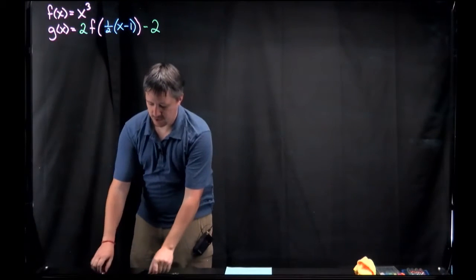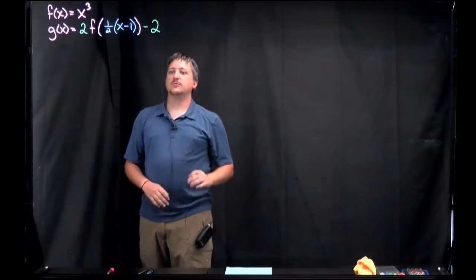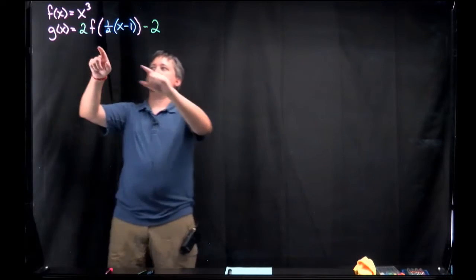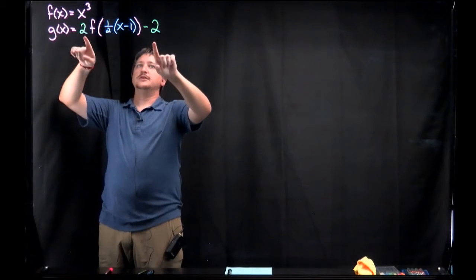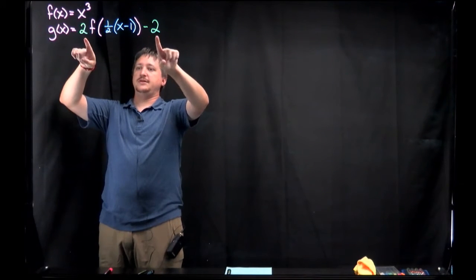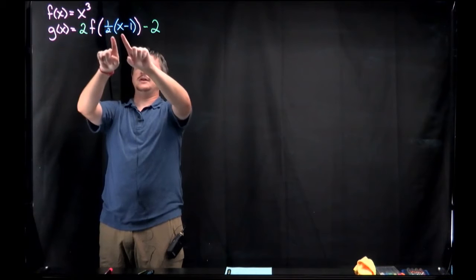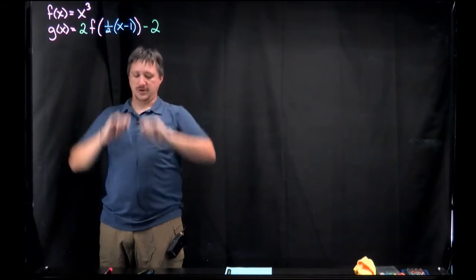So I'm going to have 2 times f of 1 half times x minus 1, that will be the close of the f part, and then I'm going to have minus 2. So I've color coordinated this so I can see that I have the f part, that's the pink. The green stuff, this is the y stuff. And the inside, the blue, is the x stuff.